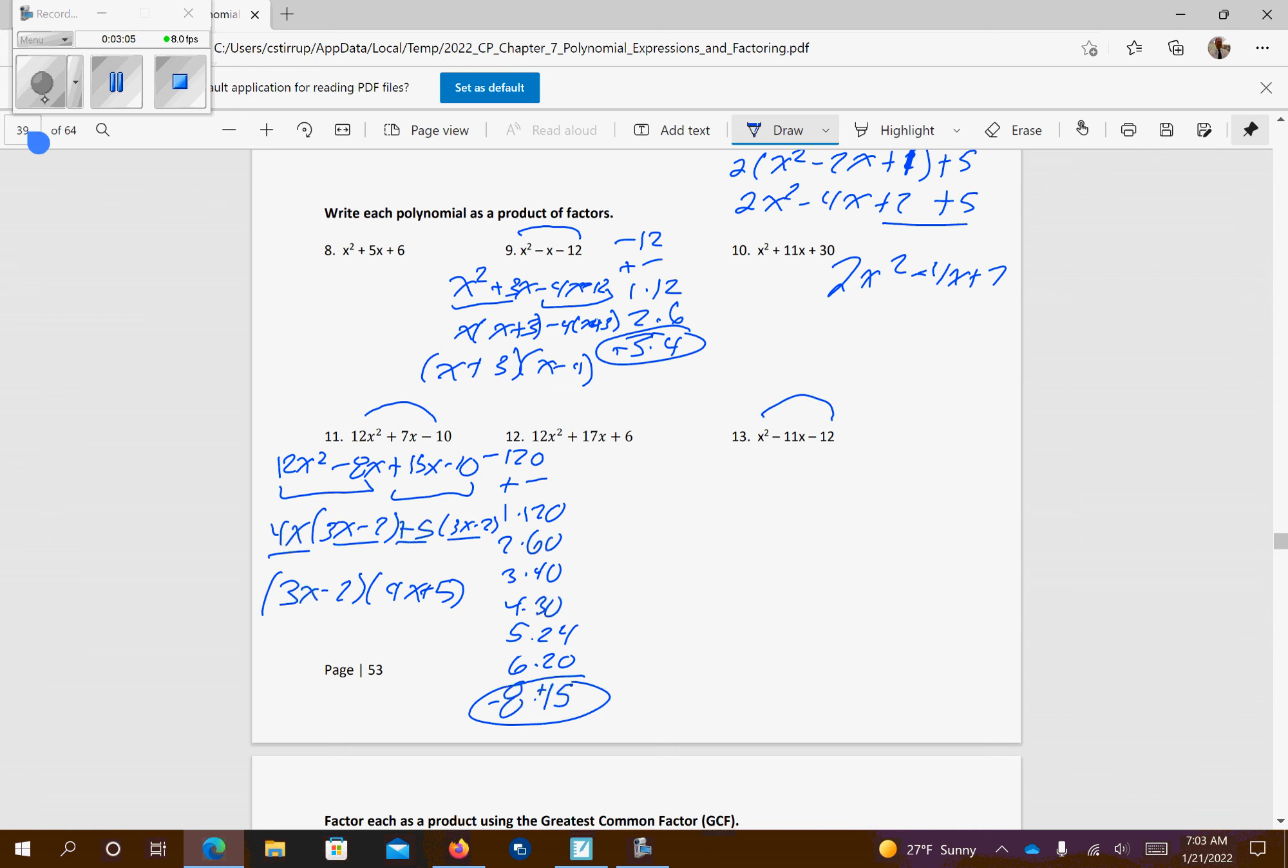Alright, so this one's similar to number 9, so that's negative 12, so I have alternating signs, so I have 1 and 12, 2 and 6, 3 and 4. I think negative 2 and positive 1 are going to work. So I have x squared minus 12x plus 1x minus 12, so I have x and x minus 12. Factor out a positive 1, I have x minus 12, so I have x minus 12 and x plus 1.